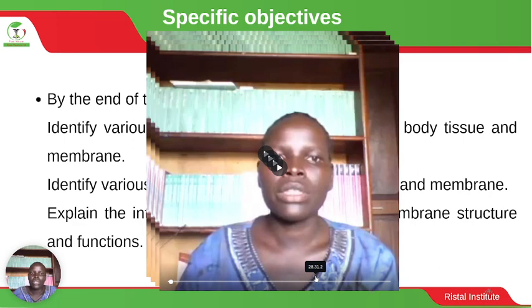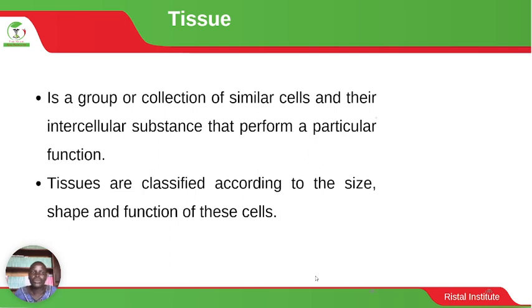Tissue — as we have mentioned before in our introduction to anatomy — is a group or collection of similar cells with intercellular substance that perform a particular function. So when a group of cells are put together they form what we call a tissue. Our tissues are classified according to the size, shape and the function of these cells as they perform the same functions.